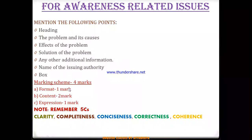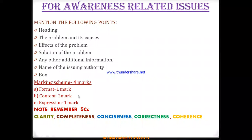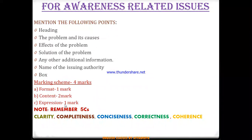In poster making, four marks are divided as follows: format is given one mark — this covers the box, heading, and picture placement. Content is given two marks — your content should be accurate, lucid, clear, convincing, and contain all necessary points including the problem, causes, effects, and solutions; the issuing authority is also included under format. Expression is given one mark — this covers how effectively you have used the words.